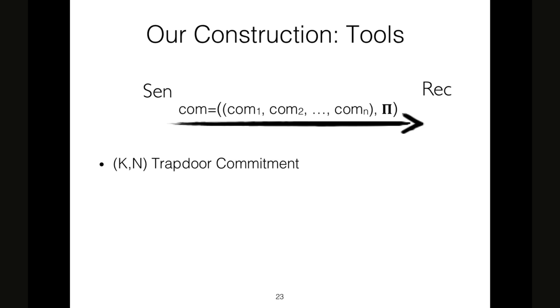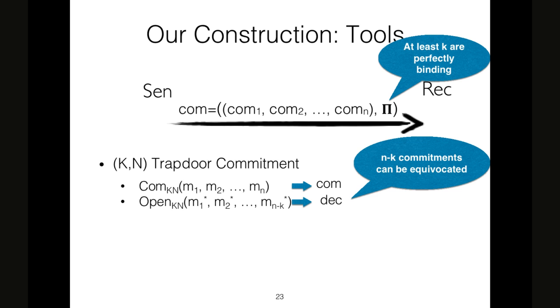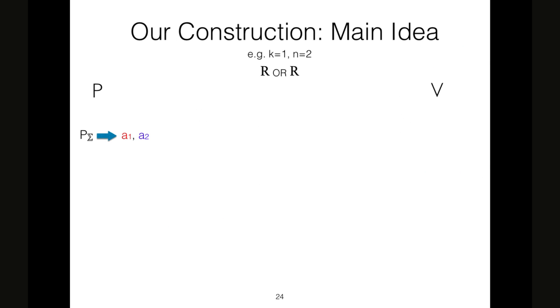How about our construction? As a main tool, we use a (K,N) trapdoor commitment. That is, we have a sender that computes N commitments and we have a protocol PI that proves that at least K out of N of these commitments are perfectly binding. Also, for the rest of the commitments, we can equivocate to any value that we want by the opening procedure by specifying which message we want to open with respect to the commitments that are not perfectly binding. As a second component, we use a delayed input sigma protocol and the special honest verifier zero knowledge associated.